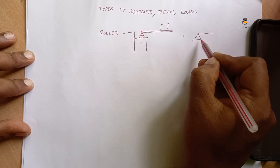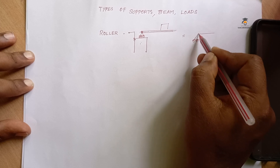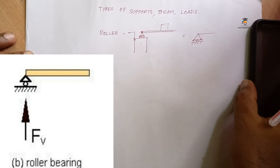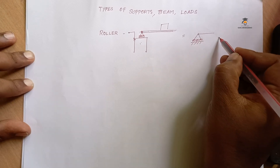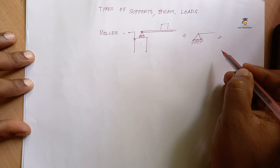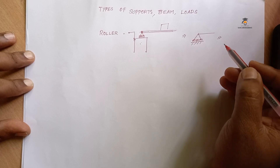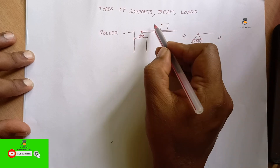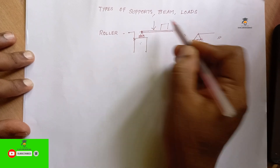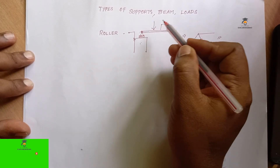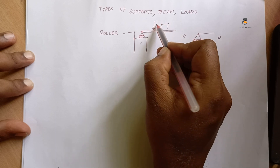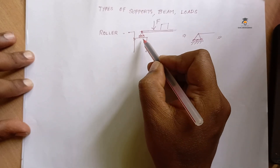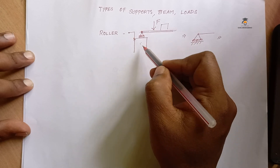This is a roller. This is a triangle. This is a reaction — an unknown force. First, force and reaction. Force is applied force. This is a vertical force — an external force acting against the support condition.